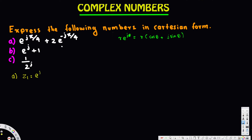Let's look at the first one. Let's say z1 is equal to e to the power j times 5π/4. Comparing with the pattern r·e^(jθ), r is equal to 1 and theta is equal to 5π/4. So rearranging into Euler's form, we get 1 times cosine(5π/4) plus j sine(5π/4).